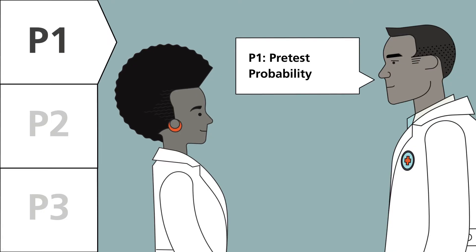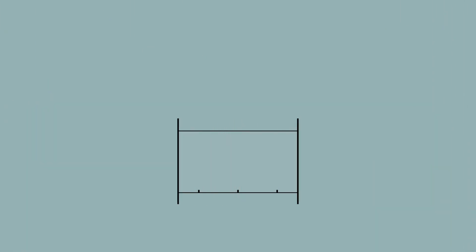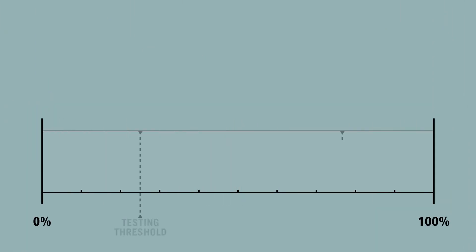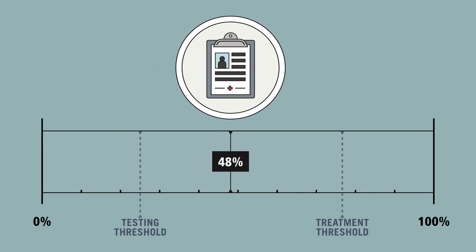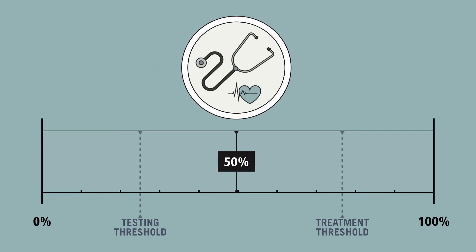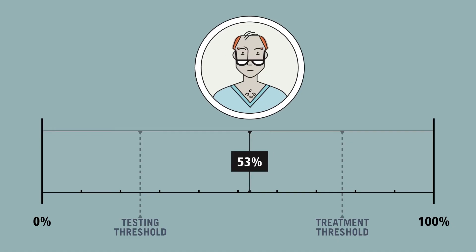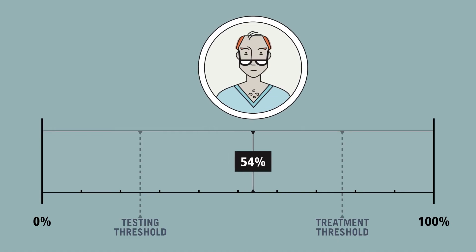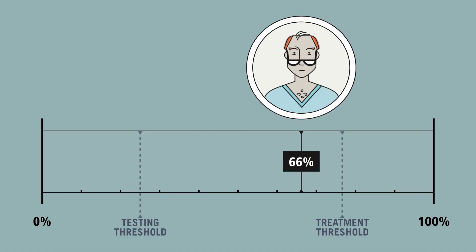Pretest probability asks: how probable is a disease prior to testing? To determine pretest probability, a doctor considers the prevalence of disease in the population, a patient's history, symptoms, and medical exam. Not only does the pretest probability help a doctor interpret a test result, but it helps them decide whether or not to test a patient in the first place.